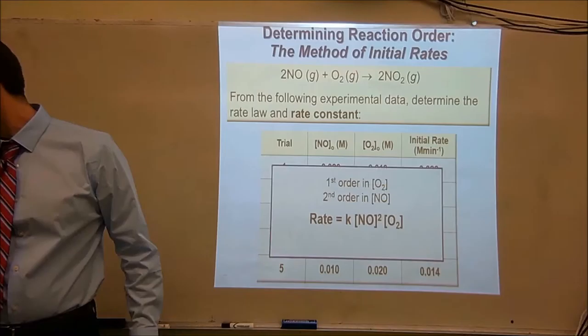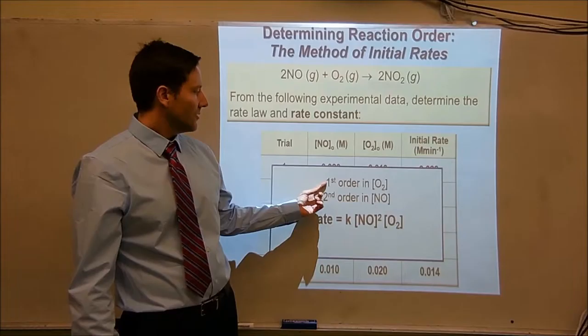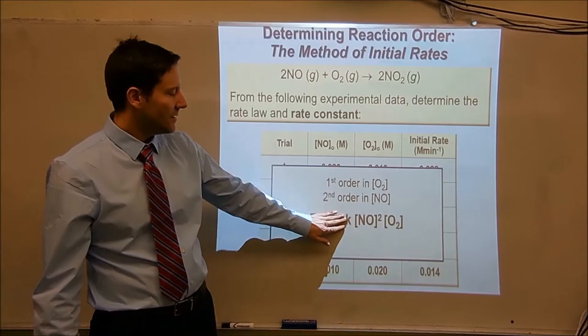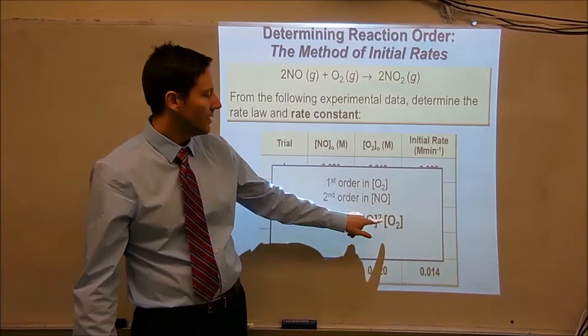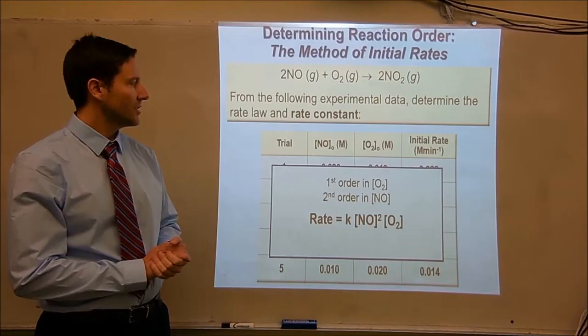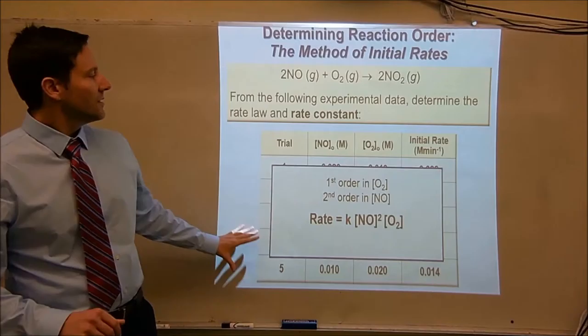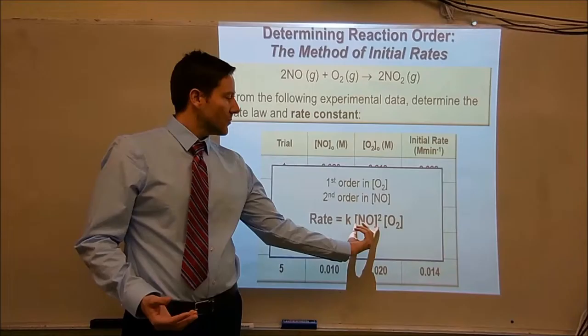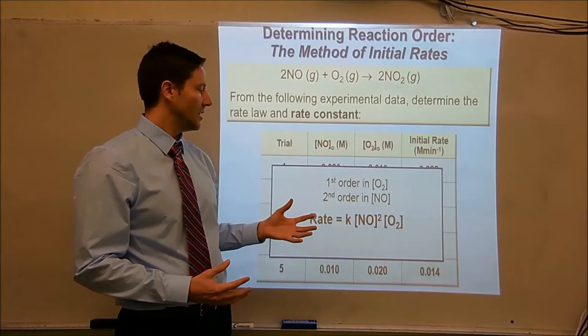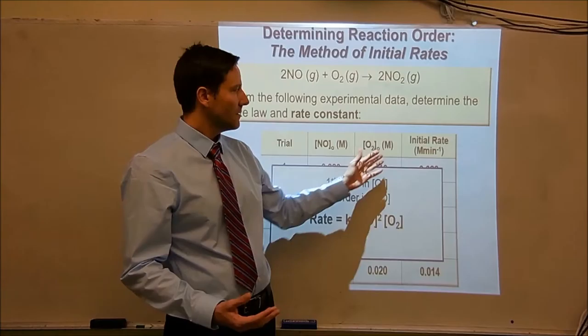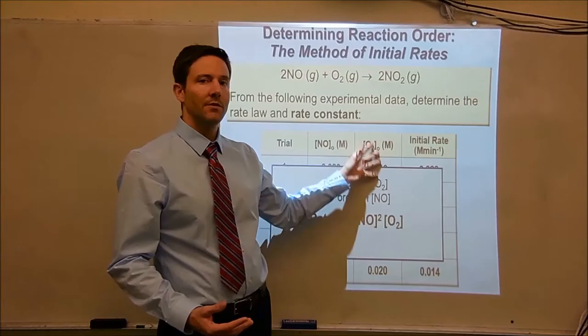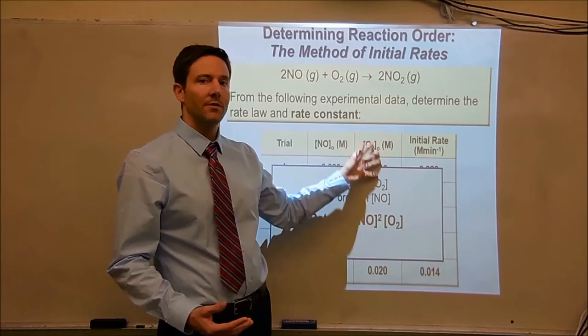Now we can generate a rate law expression for this reaction. Since it's first order in oxygen and second order in nitric oxide, the rate equals the rate constant k times nitric oxide squared times oxygen to the first power. How do we use this information to solve for the rate constant? We have all this data generated from the five experiments. These brackets represent concentrations, so we can use the data from the experiments to input into this rate law expression and solve for k.